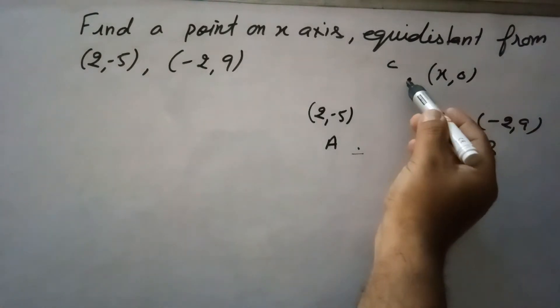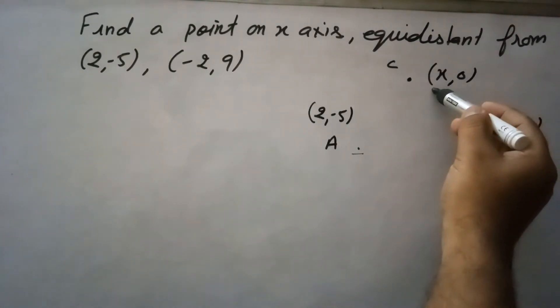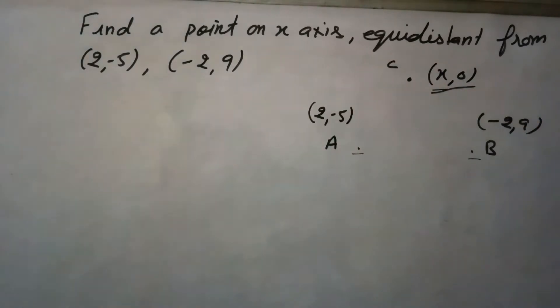And this is the point C on the x-axis. Because the point is on the x-axis, the coordinates for this point are (x, 0). Whenever the point is on the x-axis, the coordinates will be x, 0. And if the point is on the y-axis, then coordinates will be 0, y.